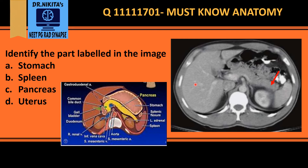The spleen is the organ on the left side. In this image we can see the pancreatic head, body, and tail in relation to the spleen. This enhancing organ is the left kidney, the organ on the right side is the liver, and this is the aorta with the superior mesenteric artery branching from it. So the labeled part here is the pancreas.